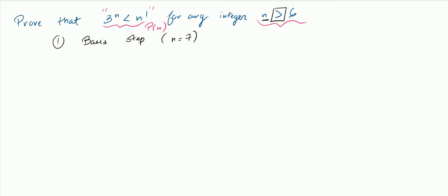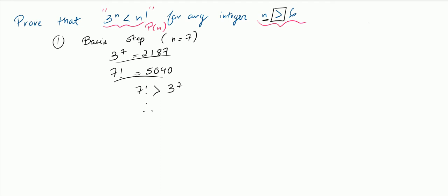Now we need to check that. So 3 to the 7 is 2187, and 7 factorial is 5040 — you can just plug it into a calculator, that's what I did. Clearly 5040 is bigger than 2187, so 7 factorial is greater than 3 to the 7. Therefore P(7) is true, and I've proved my base case.